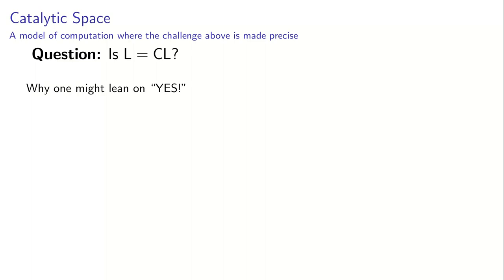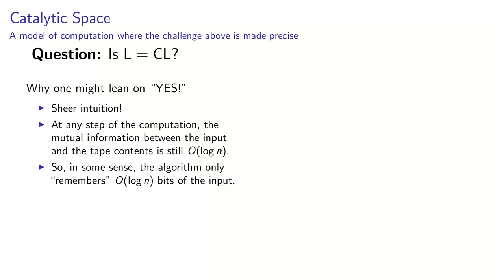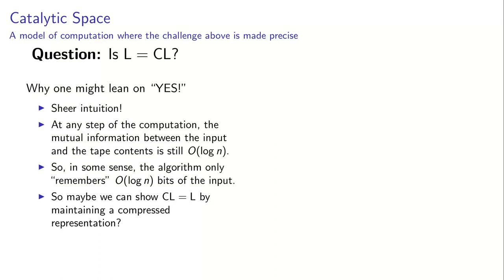The contents of the full memory need to have been restored. And now the question — the challenge — was to prove that these two classes are the same, that L equals CL. There's a very obvious reason why one might think that these two classes are the same: the sheer intuition that what possible use could you make of a memory which is full. If you try to work a bit more on how you could prove that these two classes are the same, you could come up with the following pseudo-argument. At any step of the computation, the mutual information between the input and the contents is still order log n, so in some sense the algorithm only remembers log n bits of the input. So we can try to prove that these two classes are the same by maintaining a compressed representation of these log n bits of information and updating it as the Turing machine does the computation.